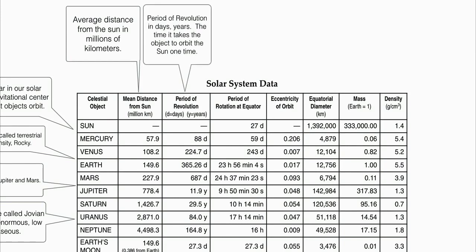The next column is the period of revolution — that's how many days or years it takes for an object to orbit around the sun one time. Saturn takes 29.5 Earth years, meaning Earth revolves around the sun 29.5 times before Saturn revolves once. Looking at Mars, it's 687 days — about twice the time it takes Earth to revolve around the sun, so a Martian year is two times as long as an Earth year.